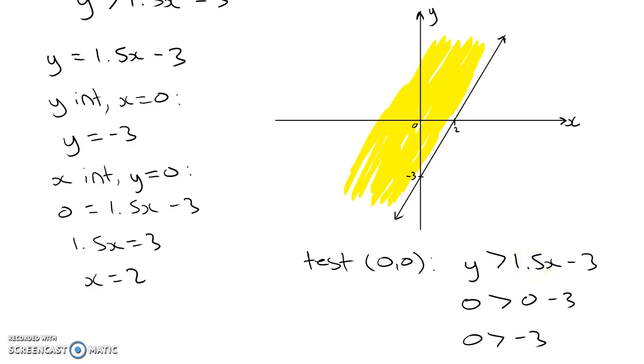Now there's one more thing I need to point out. Our inequality was y is greater than. If we had y is greater than or equal to, our graph would need to be slightly different. When we only have greater than, or if it was less than, that tells us that the solutions, the coordinates that are actually on the line itself, are not satisfied.